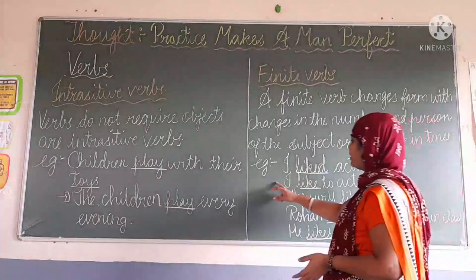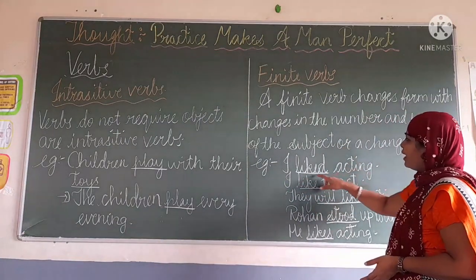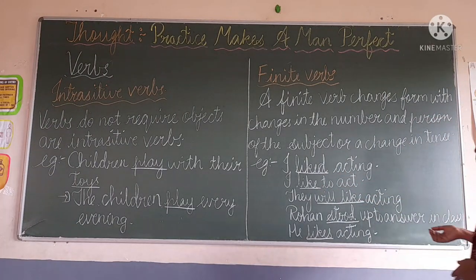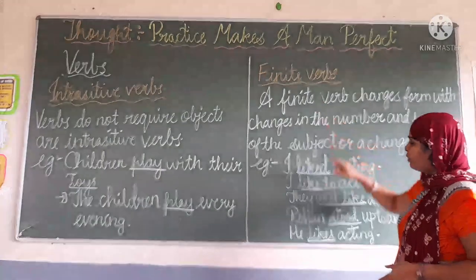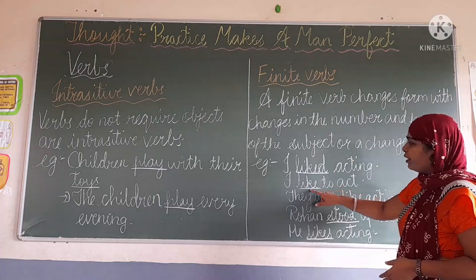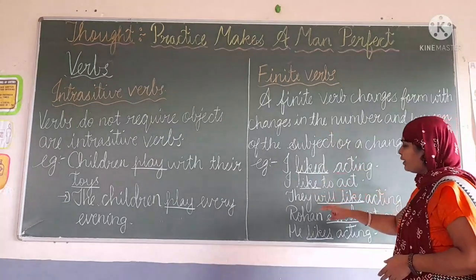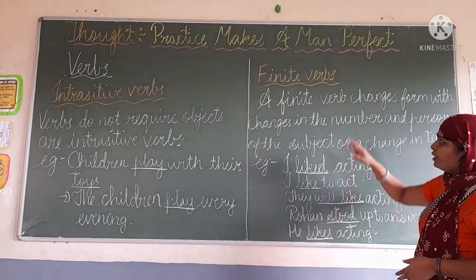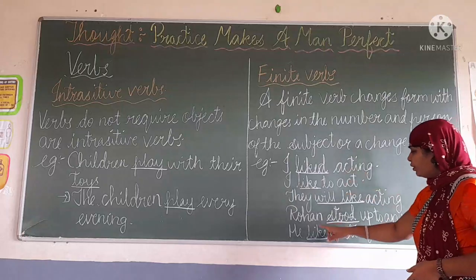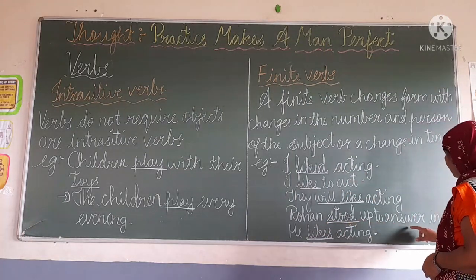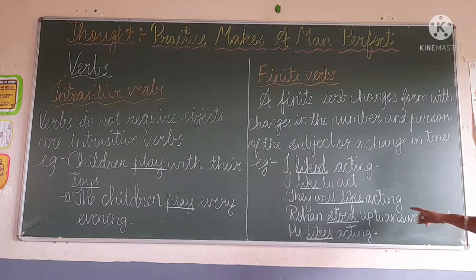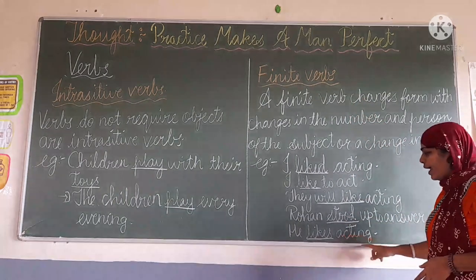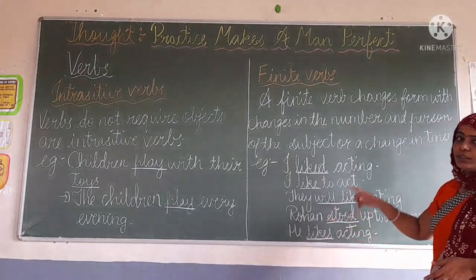Here I have given examples. 'I like acting' — 'like' is the finite verb. 'I like to act' — here the verb 'like' is also a finite verb. 'They will like acting' — 'will like' is also a finite verb. 'Roman stood up to answer in class' — here the verb 'stood' is also a finite verb. 'He likes acting' — 'likes' is also a finite verb.